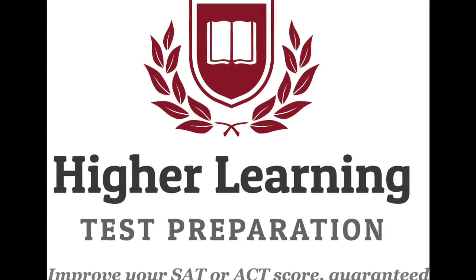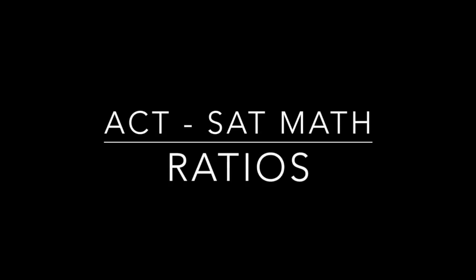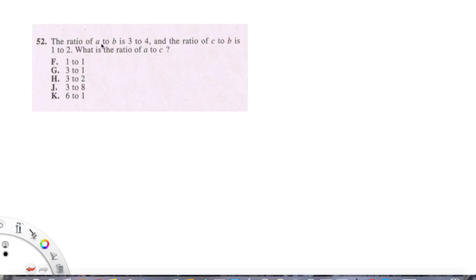Welcome back to Higher Learning Test Prep's online video tutorial series. Today let's take a look at this ratio problem taken out of the ACT. It says that the ratio of A to B is 3 to 4 and the ratio of C to B is 1 to 2. What is the ratio of A to C?